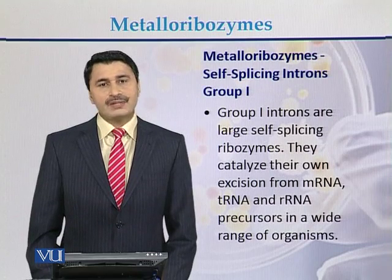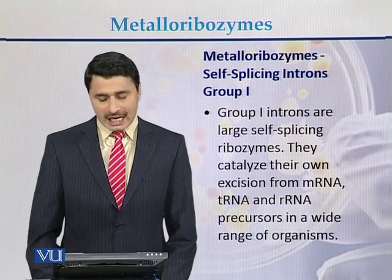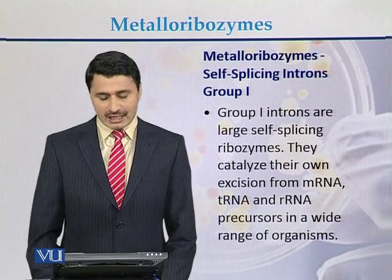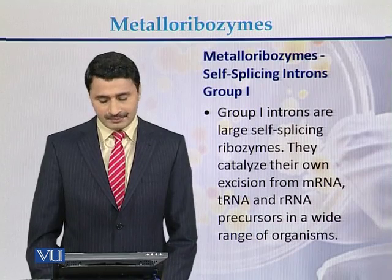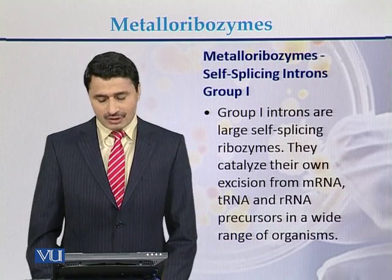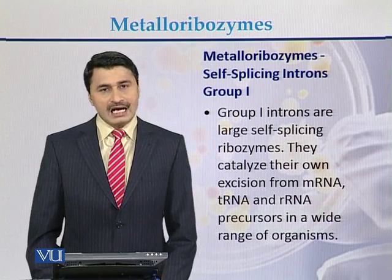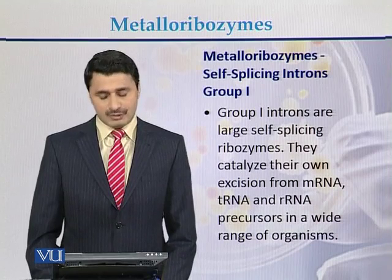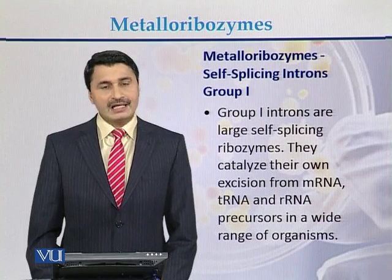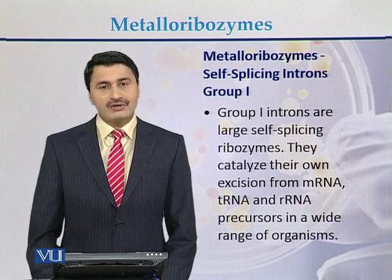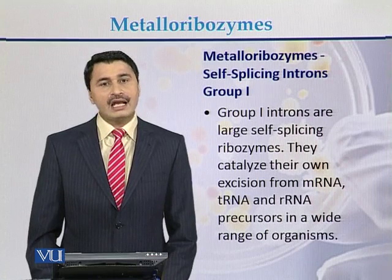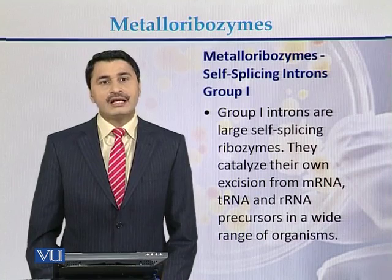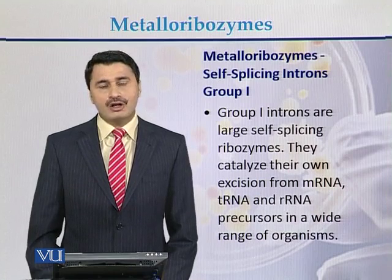Self-splicing introns are of two types. The first type is called self-splicing intron group 1. Group 1 introns are large self-splicing ribozymes. They catalyze their own excision from the messenger RNA, transfer RNA, and from ribosomal RNA precursors in a wide range of organisms.